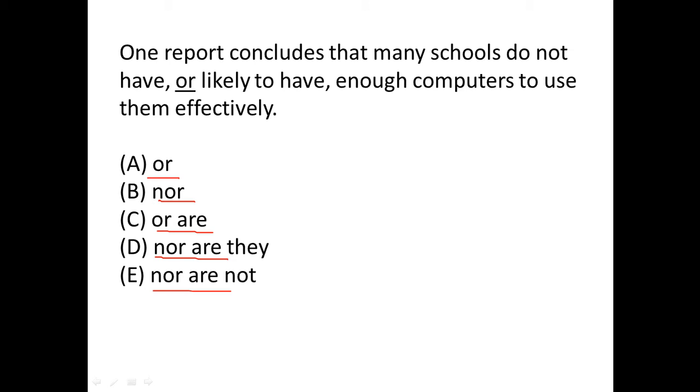So if we go back, it says one report concludes that many schools do not have, OR. So we need to have something which is parallel to DO NOT HAVE. So we need a verb after OR or NOR. We can eliminate A and B because we don't have a verb here.